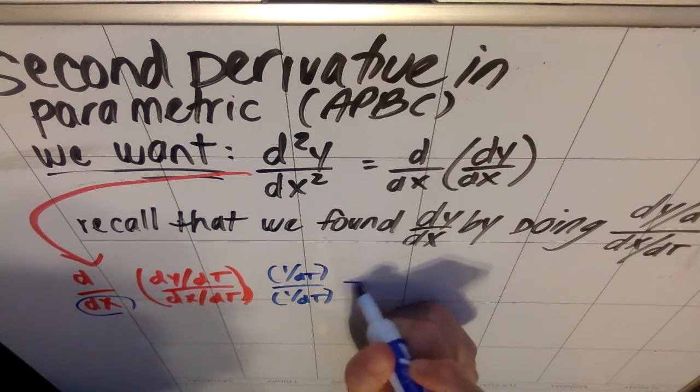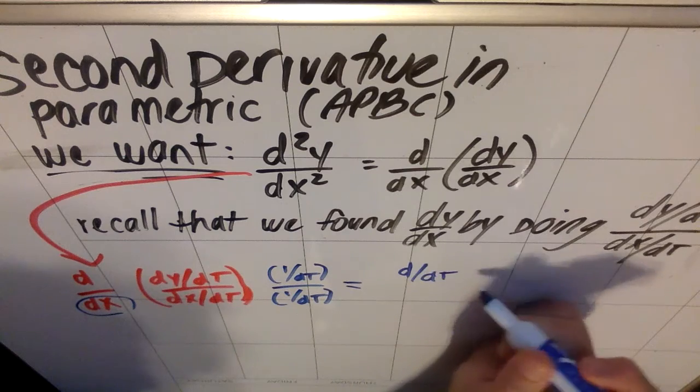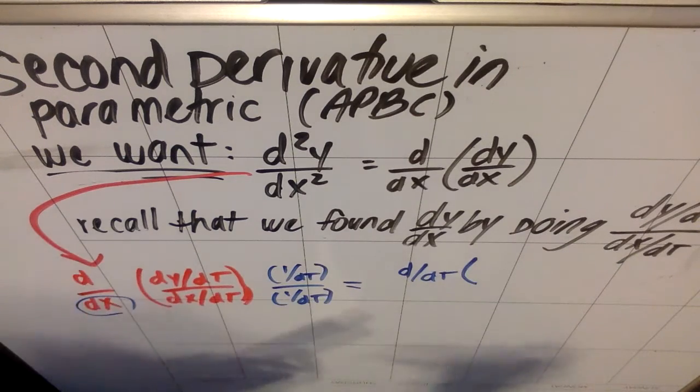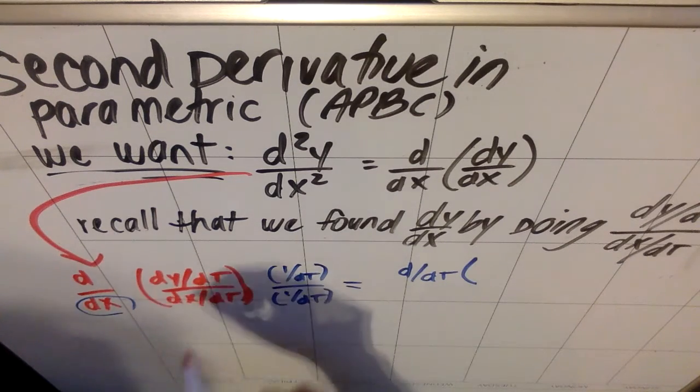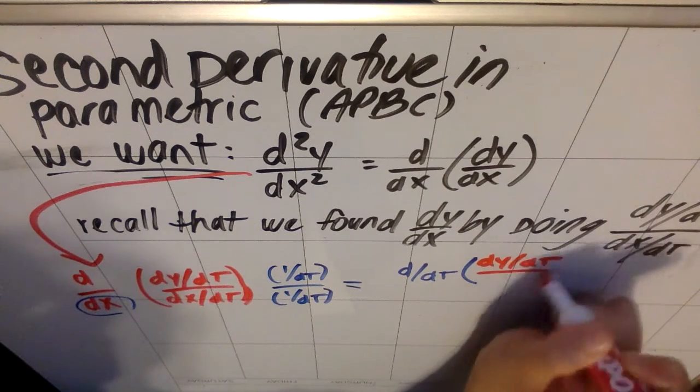So if I rewrite this a little bit, if I put these dt's at the front, what I get is d dt, which means the derivative with respect to t, of this thing that I've got in red here. Of this thing, which was my dy dt over dx dt.